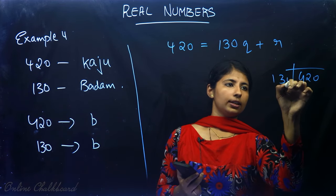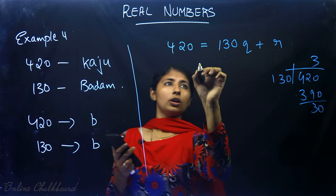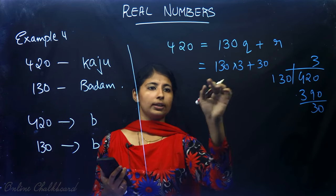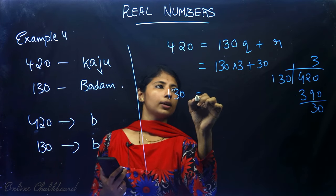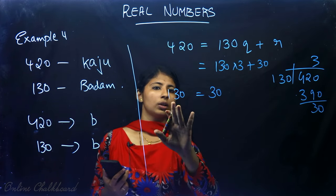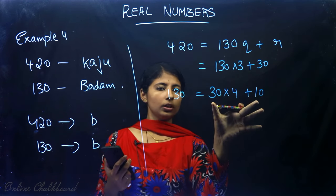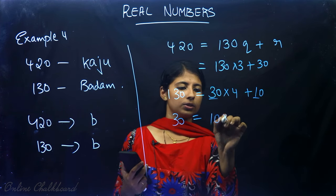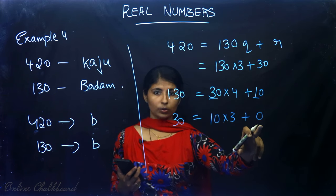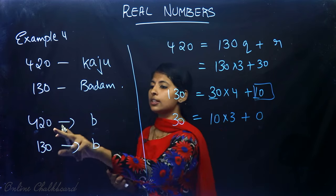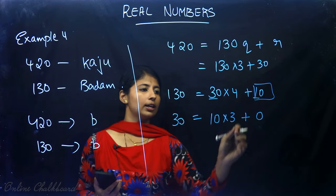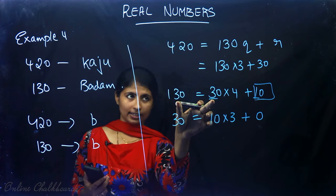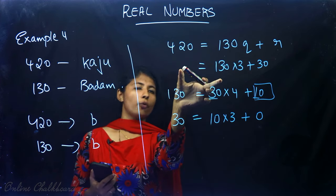Since 30 ≠ 0, we continue: 130 = 30 × 4 + 10. Still non-zero, so: 30 = 10 × 3 + 0. We got remainder 0, so the last non-zero remainder is the HCF. Thus, 10 is the HCF of 10 and 30, 10 is the HCF of 130 and 30, and therefore 10 is the HCF of 420 and 130.